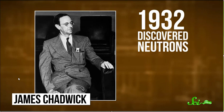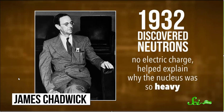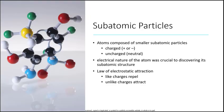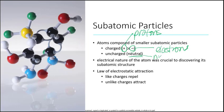One breakthrough was in 1932, when English physicist James Chadwick discovered that neutrons exist. Neutrons weren't electrically charged, and they helped explain why the nucleus was so heavy. So atoms have smaller subatomic particles — they can be positively charged, negatively charged, or neutral. The positively charged ones are called protons, the negatively charged ones are electrons, and the neutral ones are neutrons.